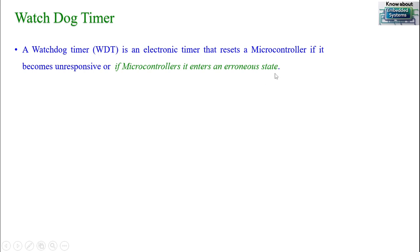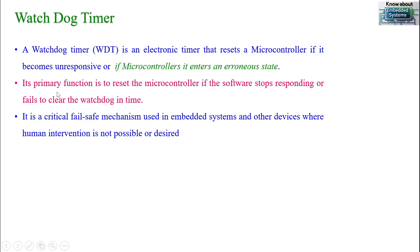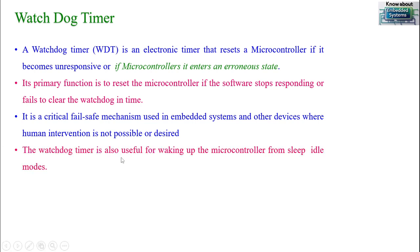Whenever the microcontroller enters into an error situation, the watchdog timer will trigger and start resetting the microcontroller. The primary function of a watchdog timer is to reset the microcontroller whenever software or hardware fails — not only software, but both software and hardware. It is a critical safety mechanism available in the microcontroller in order to safeguard your embedded system.